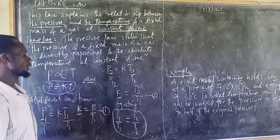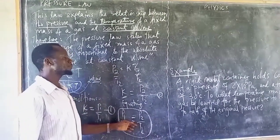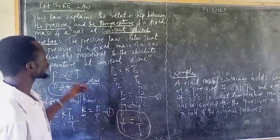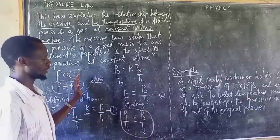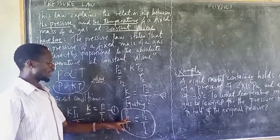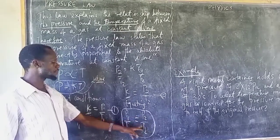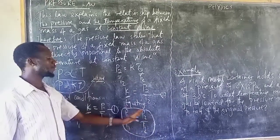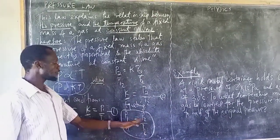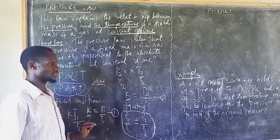This formula can be used to find what is missing. If you have been given P1 and the second pressure P2 is absent, you may substitute what is available and find what is missing.